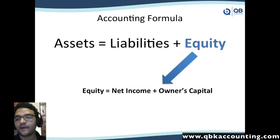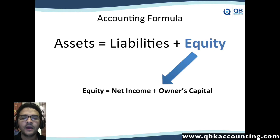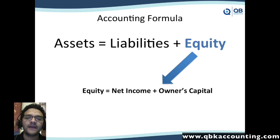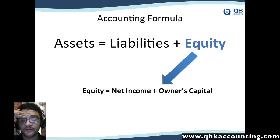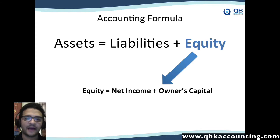We spoke about what equity meant, what net worth meant. Equity has basically two components: it has the owner's capital — let's just call it the capital — plus the retained earnings, which is also the net income, the profit. When you break down equity into net income plus owner's capital, the formula is now: assets equals liabilities plus net income plus owner's capital.